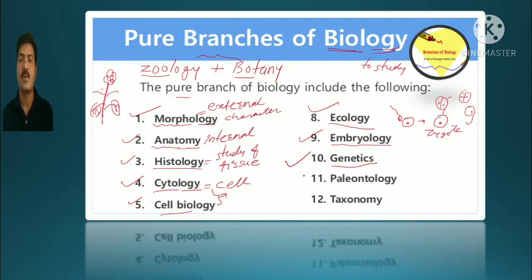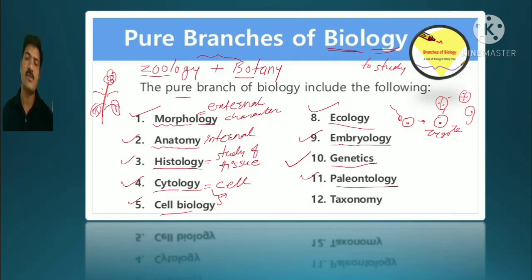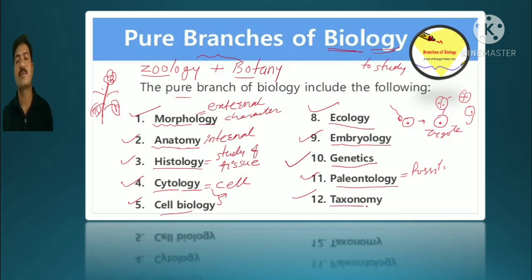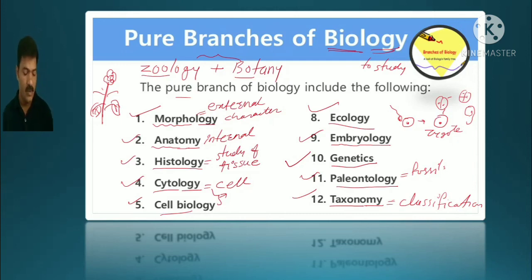The next branch is paleontology — the study of remnants and fossils. By studying dinosaur fossils, we can understand what animals existed in ancient times. Then taxonomy — the study of systematics and classification of plants, animals, and microbes — is also called Vargikaran Shastra. Today we covered several important branches of biology.